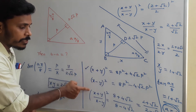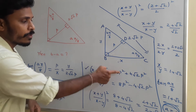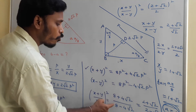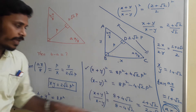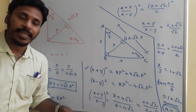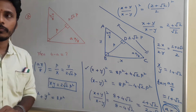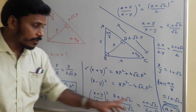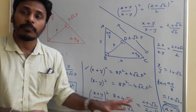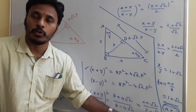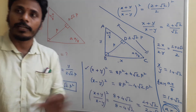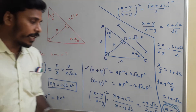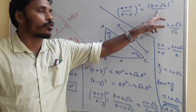Divide (x+y)² by (x−y)². The p² cancels, leaving (8 + 4√2)/(8 − 4√2). Factor out 4: this becomes (2 + √2)/(2 − √2). Since it's the ratio of whole squares, rationalize by multiplying numerator and denominator by (2 + √2). The numerator becomes (2 + √2)² and the denominator becomes (2 + √2)(2 − √2) = 2.